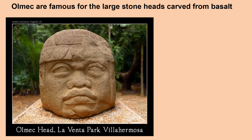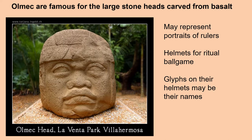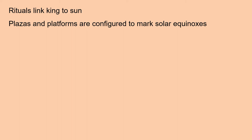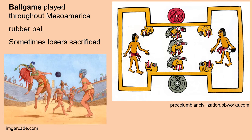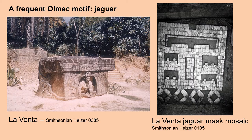The Olmec are famous for the large stone heads carved from basalt. These may represent portraits of rulers, and they appear to be wearing helmets for the ritual ballgame. We think the glyphs on their helmets may be their names. Rituals linked the king to the sun, and the plazas and platforms were configured to mark solar equinoxes. The ballgame played an important role in Olmec society and may have included sacrifices. The game was played throughout Mesoamerica using a rubber ball, and sometimes losers were sacrificed.